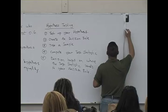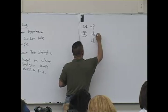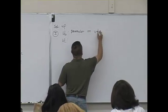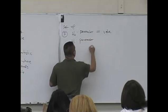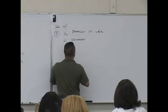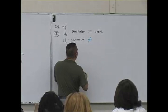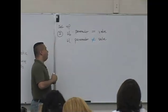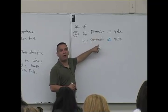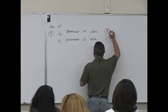The first step is to set up your hypotheses — what I call the setup. There are three types of setup. The first type is: the parameter equals a value, and the opposite of that is the parameter does not equal a value. These statements are logical opposites — one of them is going to be valid and the other is not. It's either equal or not equal.